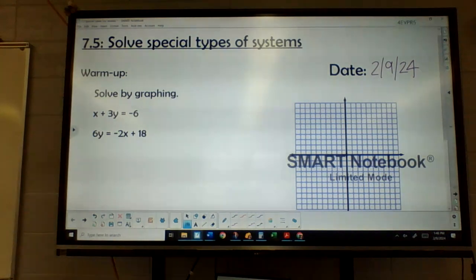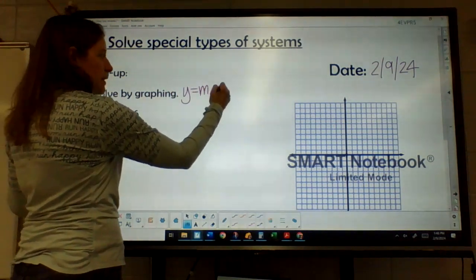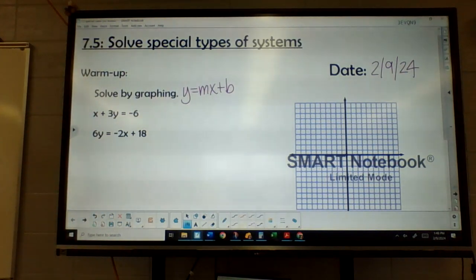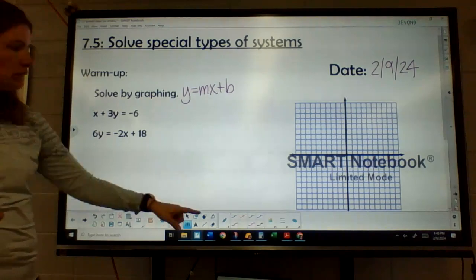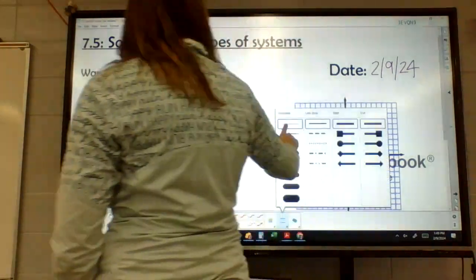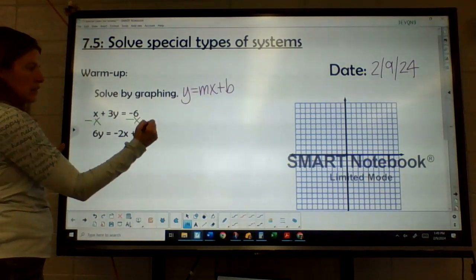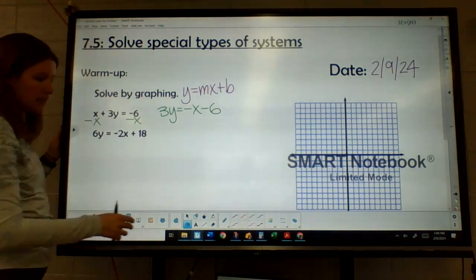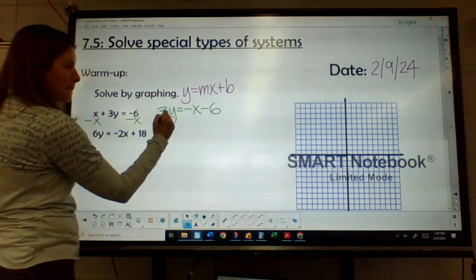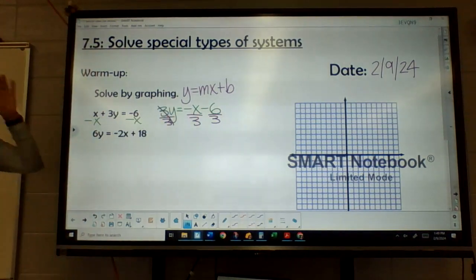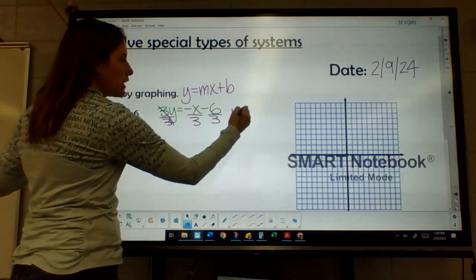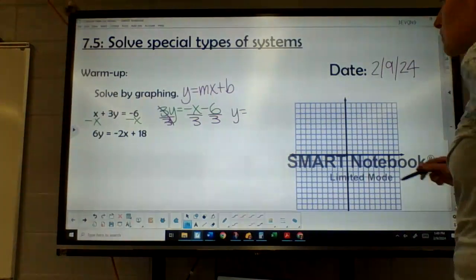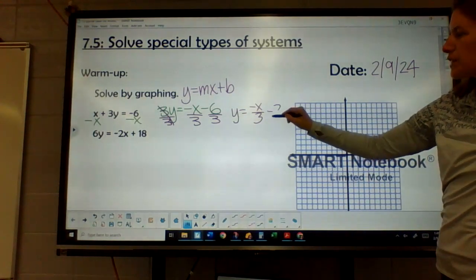We need to get our y alone in both cases. So when we solve by graphing, we need our equation to be y equals mx plus b. This top equation, we need to get that y alone. So thoughts on what we need to do first? I probably wouldn't divide first. I'd probably move that x over first. So I have 3y equals negative x minus 6. Now to get the y alone, I would divide by 3, but I have to divide every single part by 3. So my first equation is going to be negative x over 3, and then negative 6 over 3 is going to be negative 2.